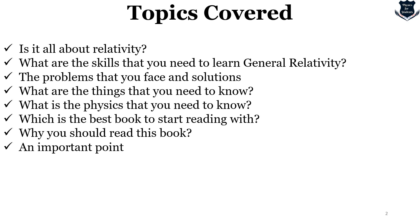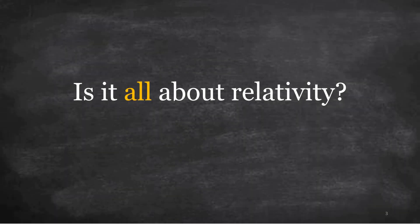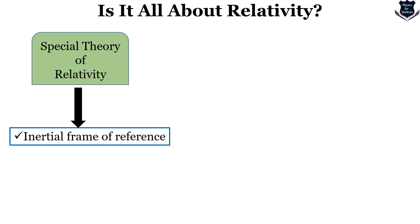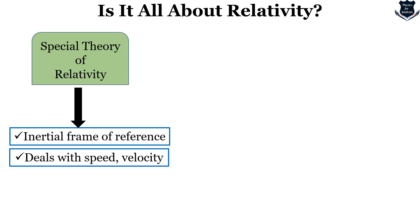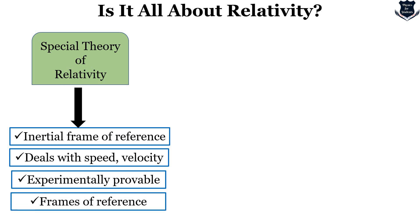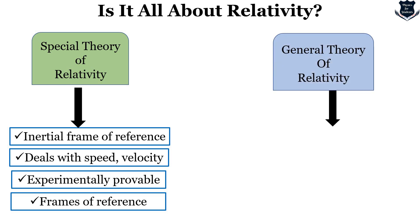So, having said this, first let us look into this question: is it all about relativity, or something else that General Relativity speaks about? The Special Theory of Relativity, which is basically the base before we go into General Relativity, particularly deals with inertial frames of reference, speed and velocity. It is experimentally provable and it deals with frames of reference. Those who have learnt the basics of Special Relativity know these quite well.